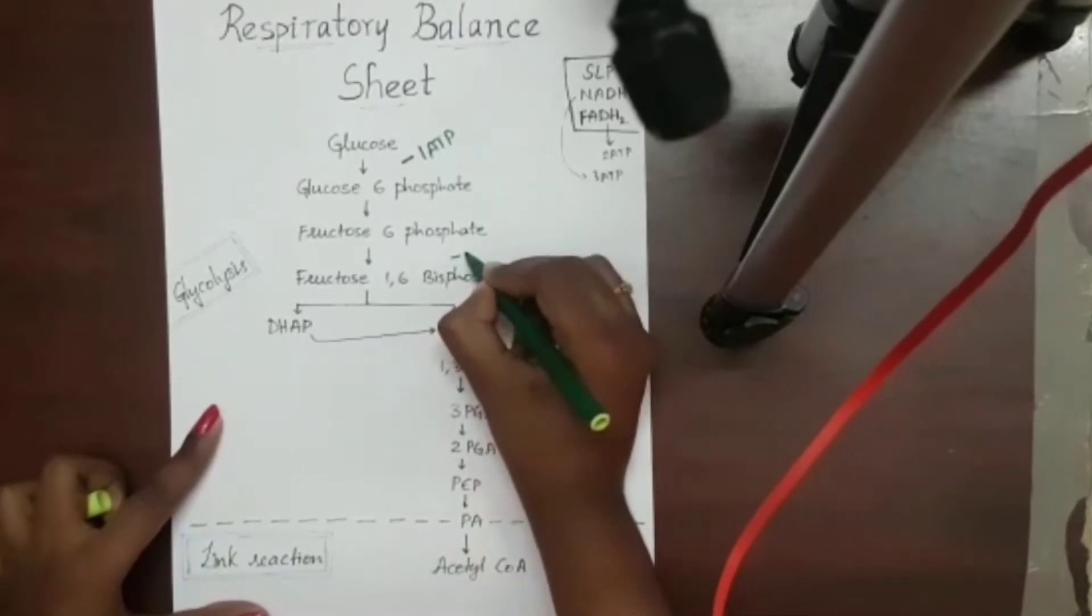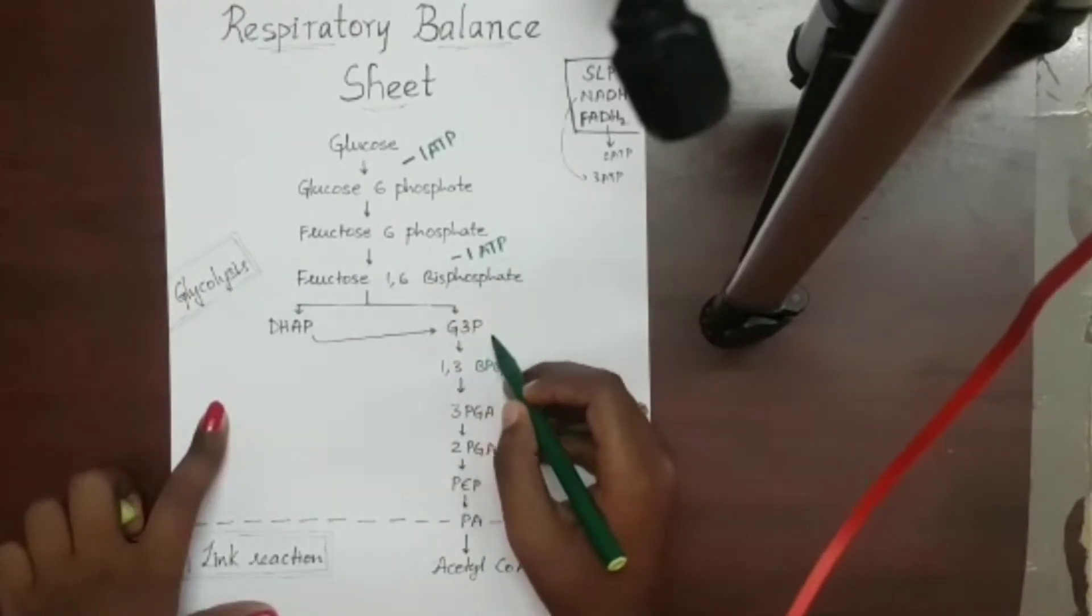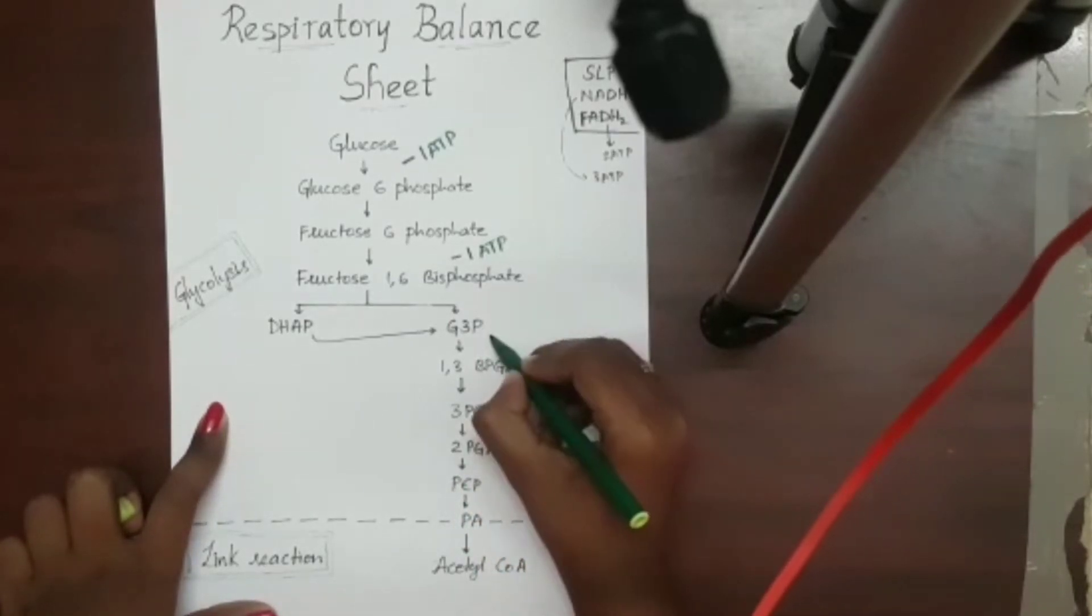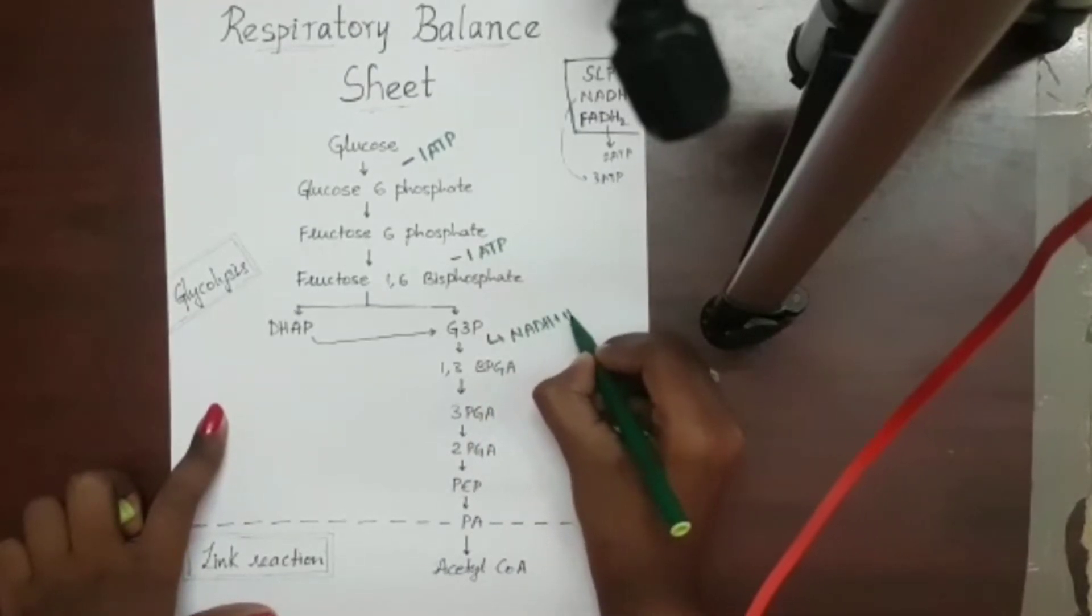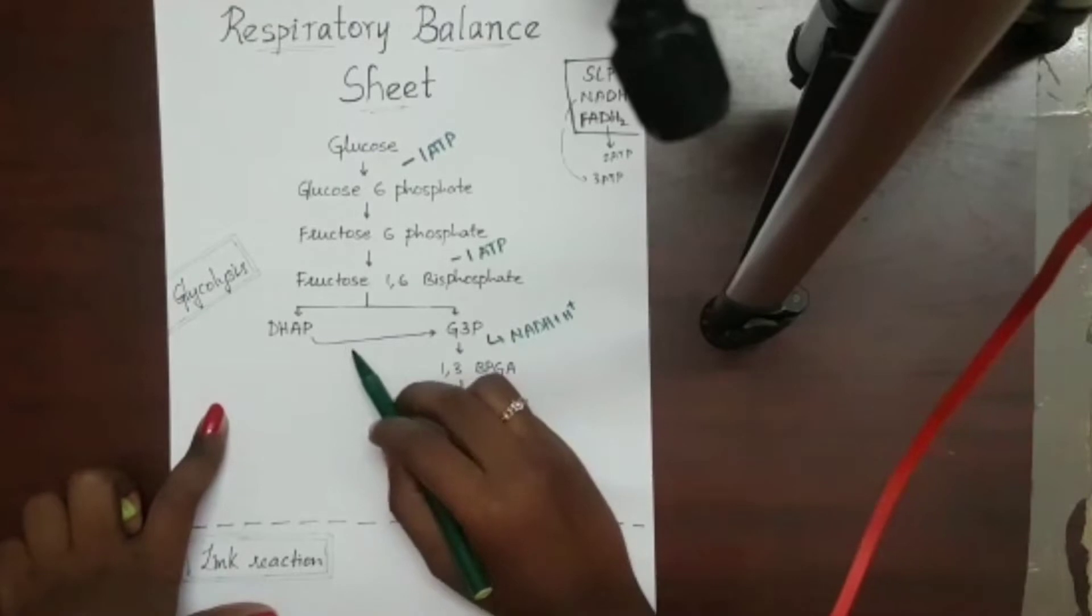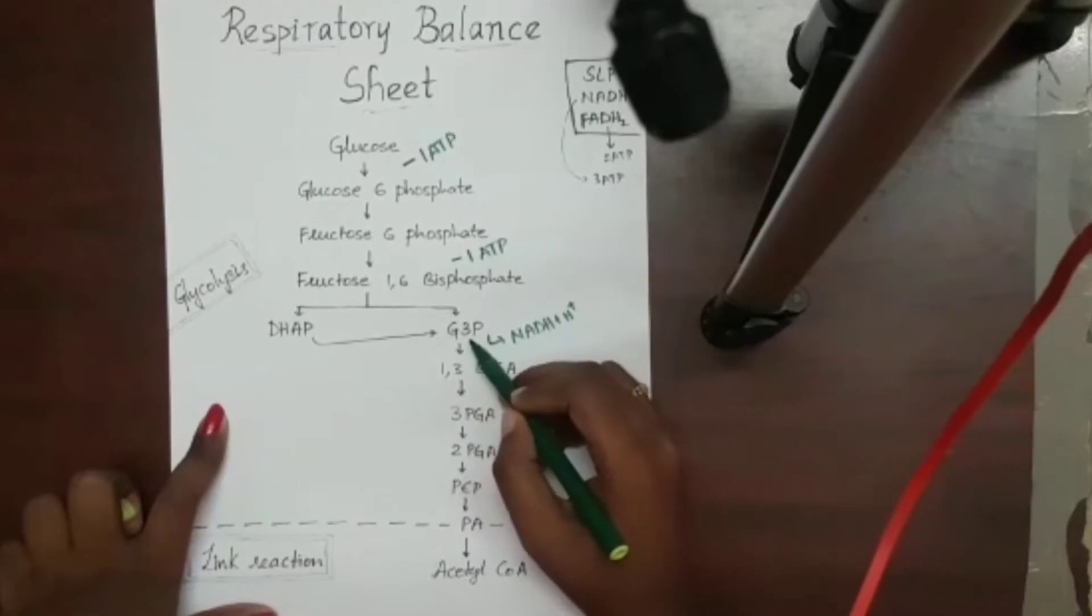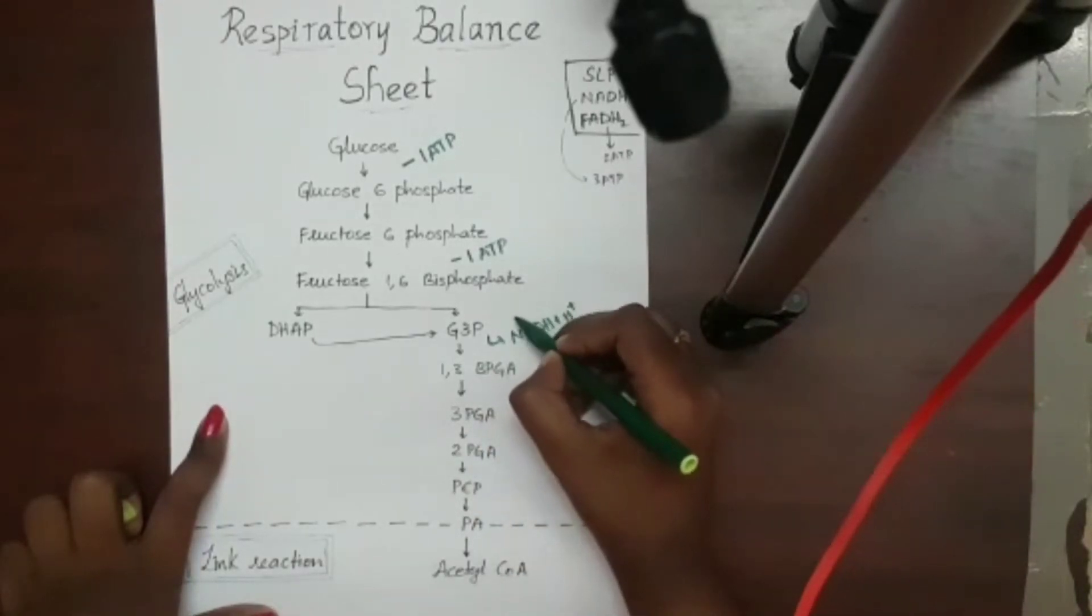From glyceraldehyde 3-phosphate to 1,3-bisphosphoglyceric acid, oxidative phosphorylation occurs. So here NADH++ is released. As isomerization took place here, from here onwards, there are two molecules. So if 1 G3P gives 1 NADH++, 2 G3P gives 2 NADH++.